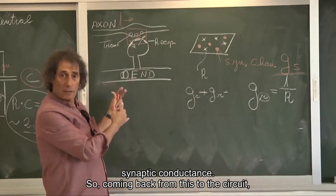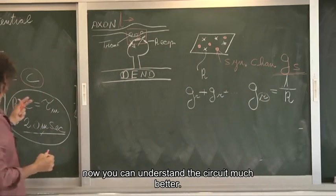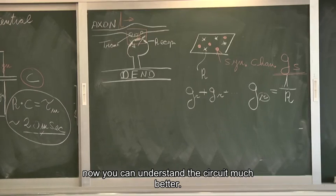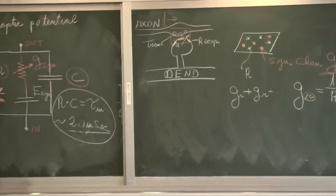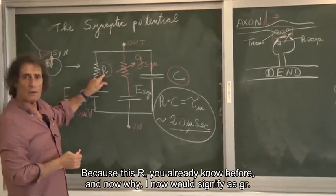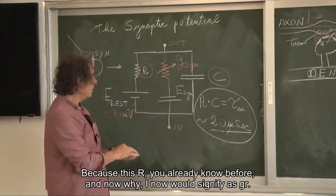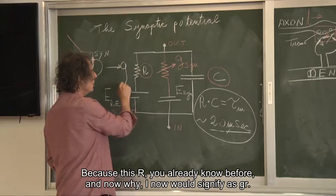So coming back from this to the circuit, now you can understand the circuit much better. Because this R, you already know before, and now I will signify it as GR.